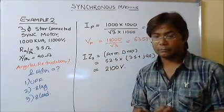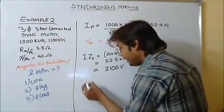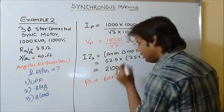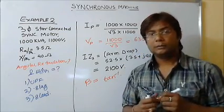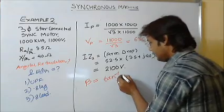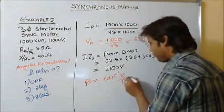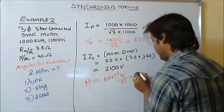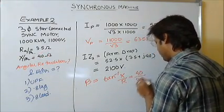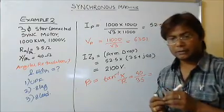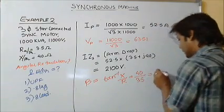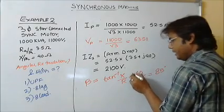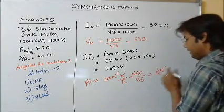I can also find beta, the impedance angle, which is beta = tan⁻¹(X/R) = tan⁻¹(40 / 3.5). This gives beta equal to 85 degrees.